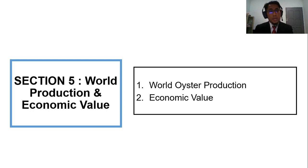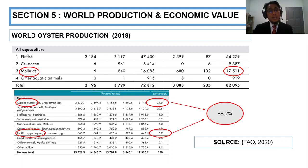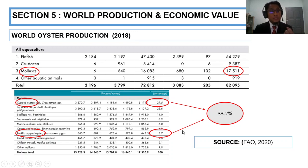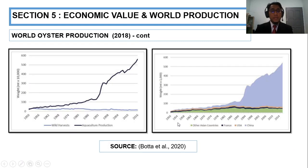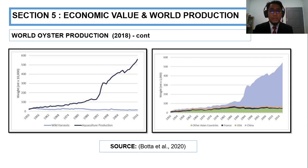Now section five, world production and economic value. According to the FAO 2020, the first largest production comes from finned fish; however, the second species production in the world comes from molluscs. As you can see, oyster itself consists of 33 percent of total mollusc production in the world, highlighting how much potential oyster has in aquaculture. This is the world oyster production from 2008, showing production increasing year by year. China is the major producer of oyster in the world.